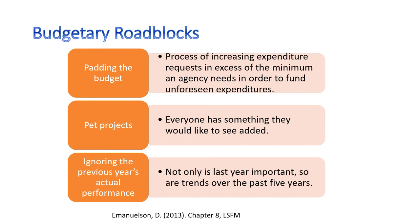There are roadblocks and challenges to budgeting. One is padding the budget — increasing expenditure requests in excess, giving yourself more money. Line items need to be sufficiently descriptive so the board can see whether they're padded. There can also be pet projects — everyone wants something added, and it's political. Another problem is when people ignore previous years' performance, which is really bad — you need to look at trends.